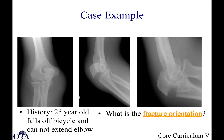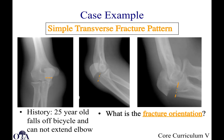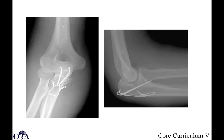Here's another case: a 25-year-old who falls off a bicycle and cannot extend the elbow. You can see a displaced olecranon fracture. It's a relatively simple transverse fracture pattern — amenable to tension band wiring as we showed. The execution mirrors what was shown in the instructional illustration, and this slightly oblique but predominantly transverse pattern is suitable for tension band wiring in most cases.